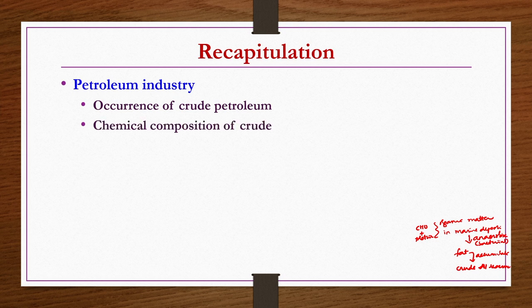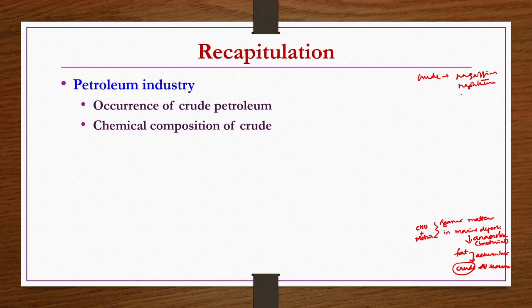These fats accumulate over the years to form crude oil reserves or petroleum reserves. Next, we discussed the chemical composition of crude — whatever crude you get, what is its chemical composition. The crude contains paraffins, naphthenic components like cyclic components, aromatics, asphers, and these kinds of components are present in crude petroleum.